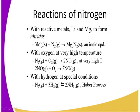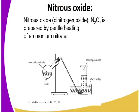With oxygen at very high temperature, nitrogen reacts with oxygen to give nitrogen(II) oxide, which is not stable and will later be oxidized to nitrogen(IV) oxide. With hydrogen under specific conditions — essentially the Haber process — requiring optimum temperature and an iron catalyst, nitrogen reacts with hydrogen to give us ammonia gas.